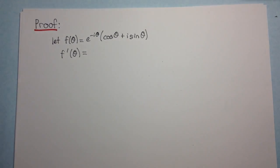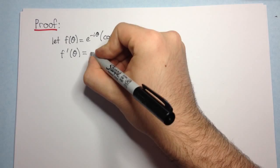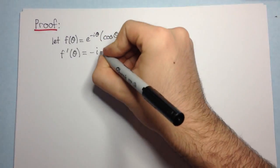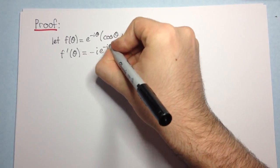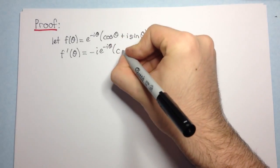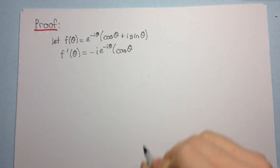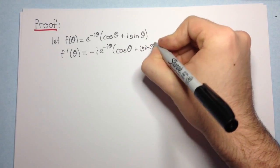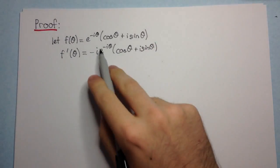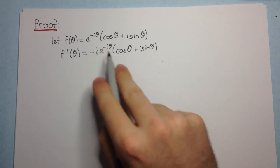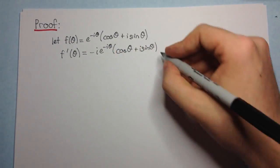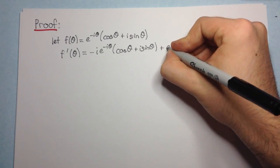So, when you differentiate an exponential function, you multiply by the derivative of negative i theta. That's cos theta plus i sin theta. And here we're using the product rule. So we've differentiated the first one and multiplied by the second part. Now we have to differentiate the second part and multiply by the first part.